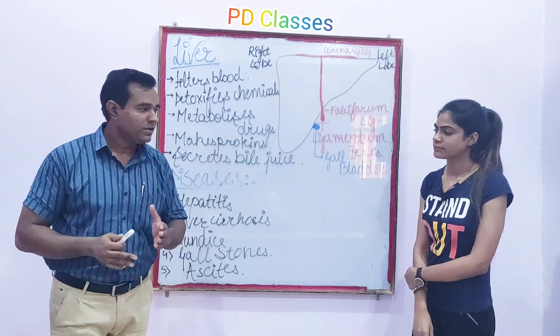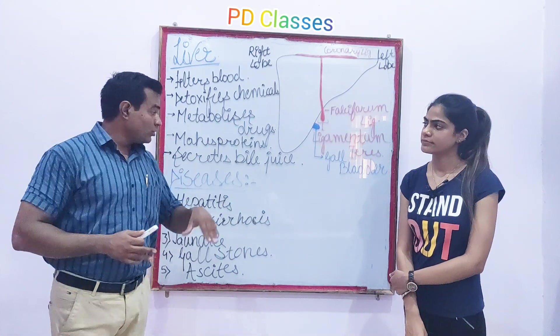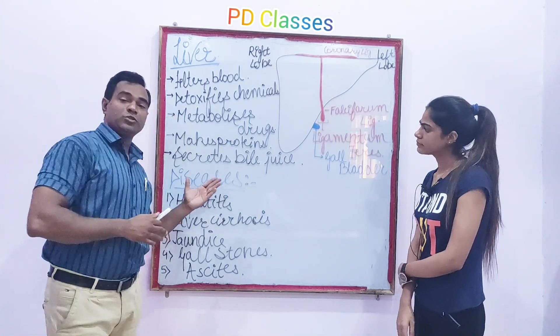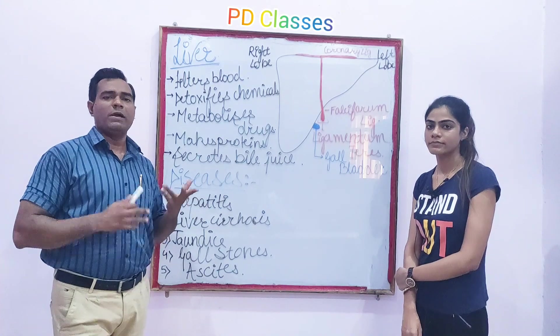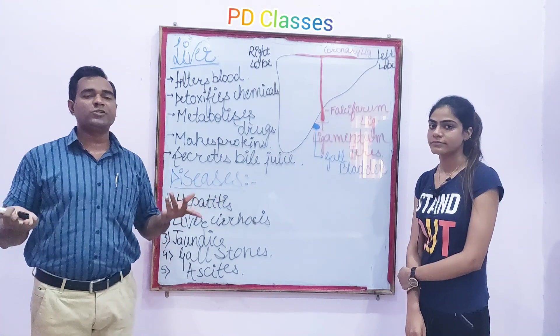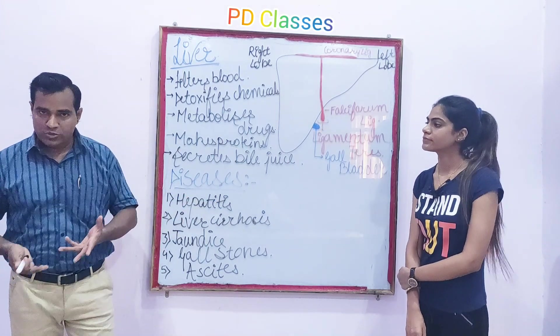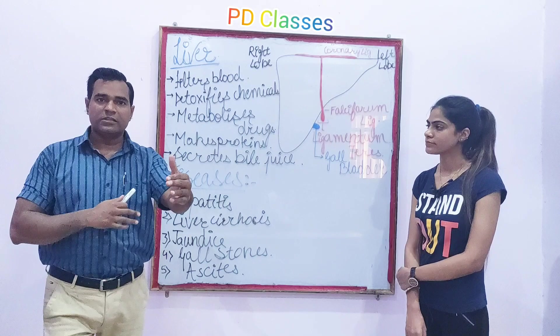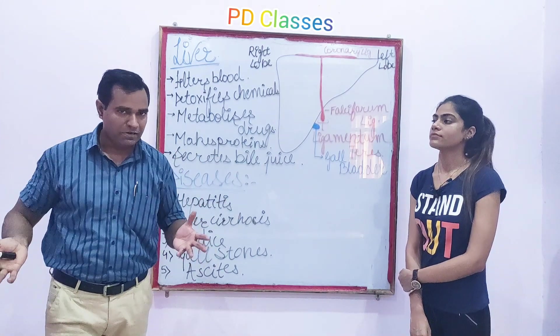In the digestive system, the pancreas and the liver have related roles. The pancreas secretes pancreatic juice; the liver secretes bile juice. Bile juice helps absorb fat, while pancreatic juice assists overall digestion.